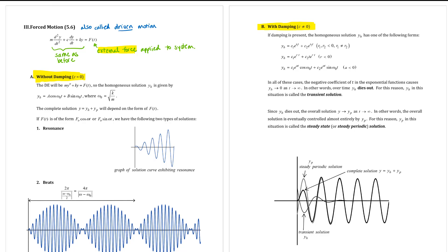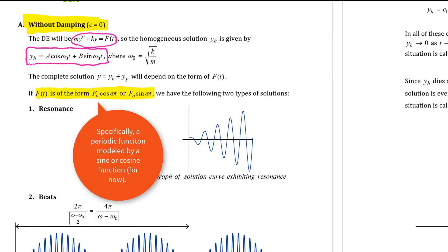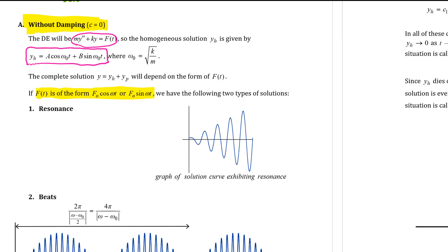We're going to focus on no damping, C equals zero, first. The differential equation will have no C term. If you solve the characteristic polynomial for the yh part of the solution, you're going to get two pure imaginary zeros, so yh is just a sum of scalar multiples of trig functions. The yp part of the solution will depend on what that function f of t looks like. We're going to focus on f of t being a periodic function — we'll need more from the next chapter to handle more complicated forcing functions.